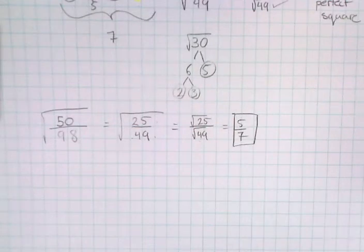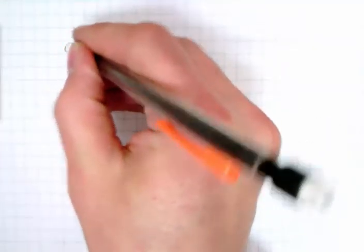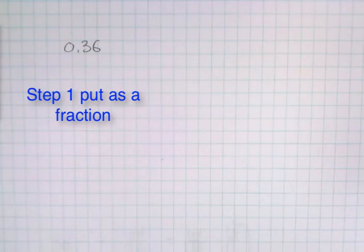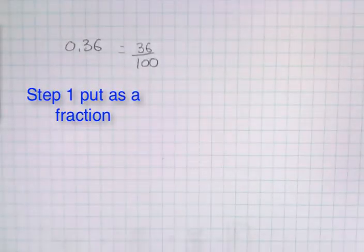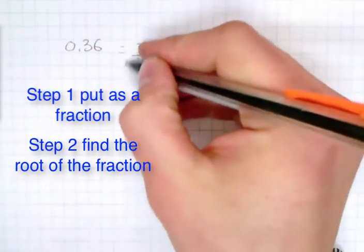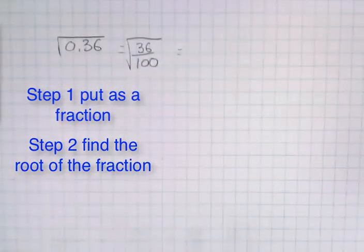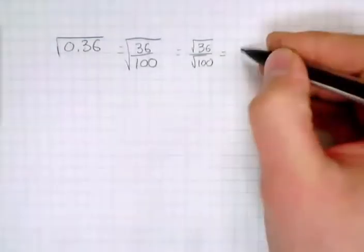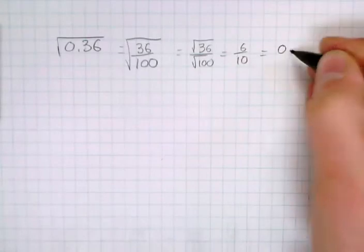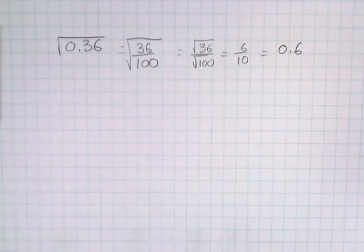Now let's try decimals. I'm going to show you two ways of doing decimals. Let's look at 0.36. One way is to make 0.36 into a fraction, which is equivalent to 36 over 100. Now that it's a fraction, I can just take the square root — that's the same as square root of 36 all over square root of 100, which gives me 6 over 10, which is equivalent to 0.6. Once we make it a fraction, we know how to square root a fraction.